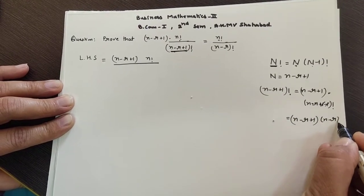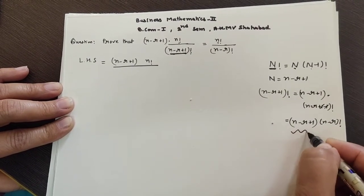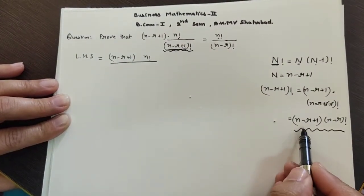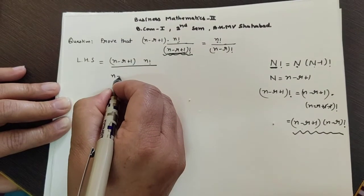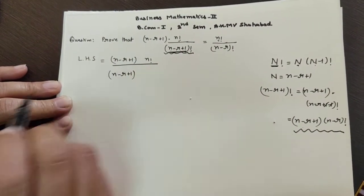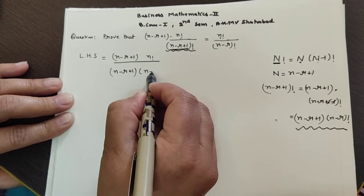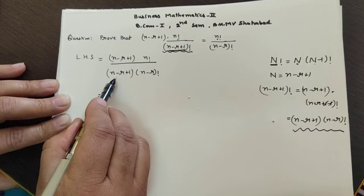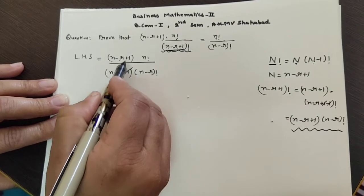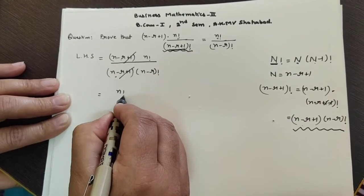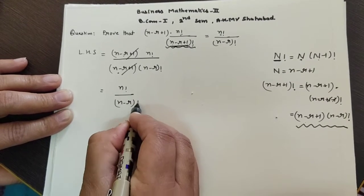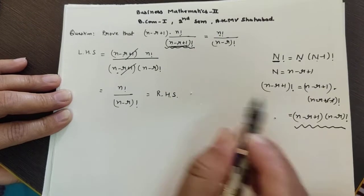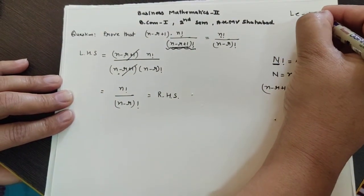Substituting back: we have (n-r+1)·n! divided by (n-r+1)·(n-r)!. The (n-r+1) terms cancel, leaving n! / (n-r)!, which is exactly the right hand side. This completes the proof for the second question.